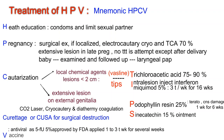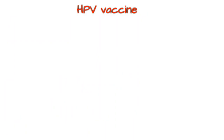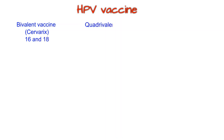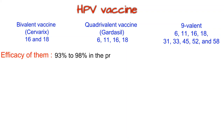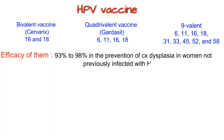Vaccine options: Bivalent vaccine Cervarix — against HPV 16 and 18. Quadrivalent vaccine Gardasil — against HPV types 6, 11, 16, and 18. 9-valent HPV vaccine — against HPV types 6, 11, 16, 18, 31, 33, 45, 52, and 58. All three vaccines have 93–98% efficacy in the prevention of cervical dysplasia in women not previously infected with HPV 16 and 18.